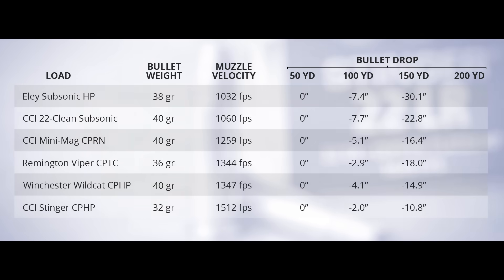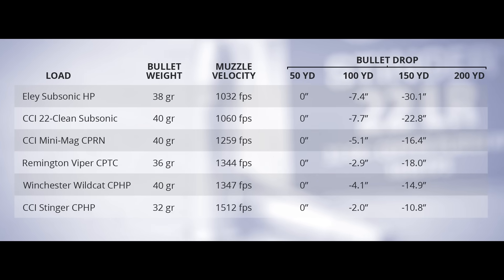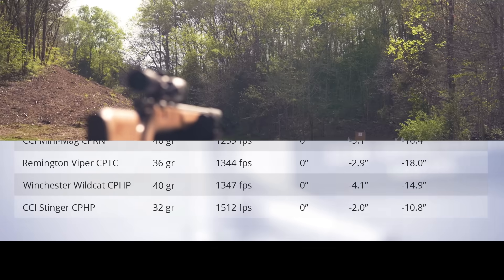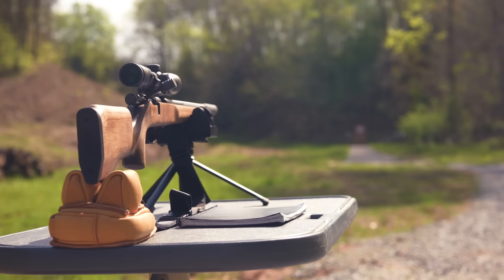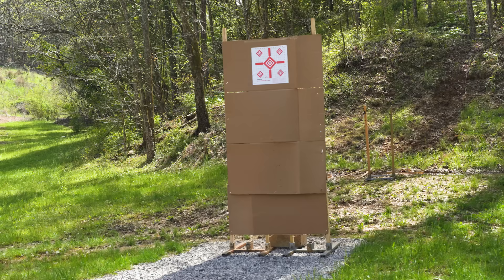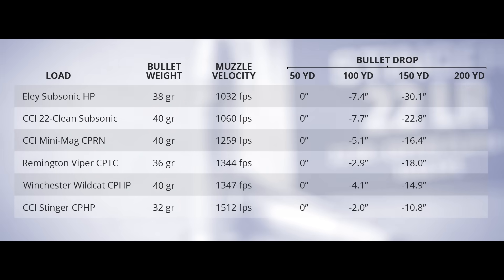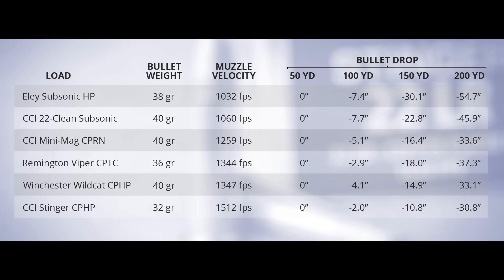Moving out to 150 yards, the gulf between the fastest and slowest bullets is even wider. The Ely 38 grain subsonic drops 30 inches at 150 yards, while the Stinger drops just under 11 inches. The other supersonic loads were a few inches lower. All of those bullets really start to drop between 150 and 200 yards — we had to staple together a special extra tall target just to catch all the bullets. At 200 yards, the Stinger impacts two and a half feet below the point of aim, and the Ely drops four and a half feet.